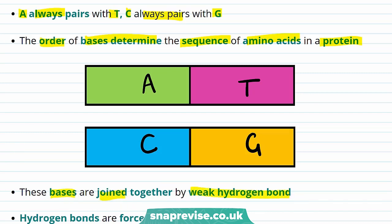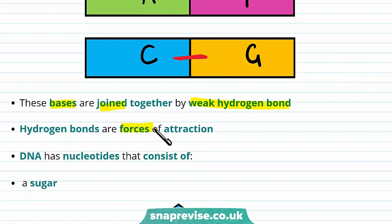So A is paired to T, and that means there's a hydrogen bond between them. C is paired to G, and that means there's also a hydrogen bond between them, and that helps them fit together. This is because hydrogen bonds are forces of attraction, and that helps attract the two different complementary base pairs.